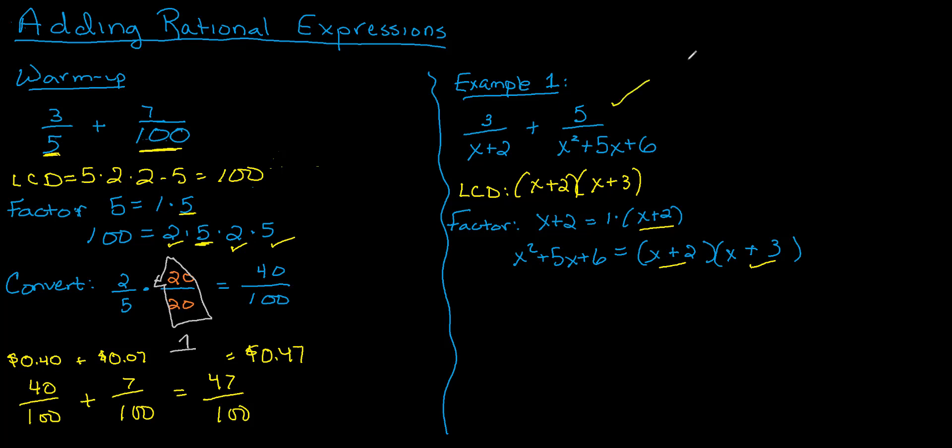The second fraction looks great, it's already got the LCD that I want. The first fraction is what I need to work on. Let's convert 3 over x plus 2. I need to multiply that by something that will give me my desired denominator, x plus 2 times x plus 3. What am I missing? The x plus 2 is there, but the missing factor was this x plus 3. So that's what we need to multiply by. Again, I'm thinking about this giant 1. If I put the x plus 3 in the denominator, it better be in the numerator as well.